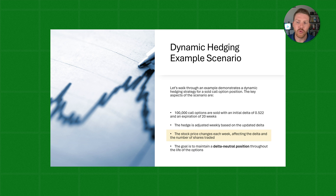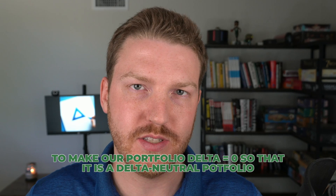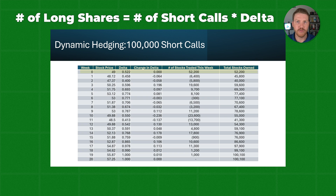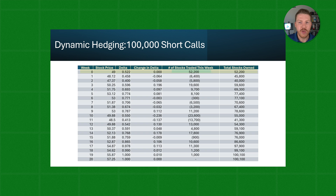Each week the stock price is going to keep changing, which will affect the Delta. So we need to determine how many shares to buy or sell of the underlying stock to maintain a Delta neutral portfolio. We are short 100,000 call options and need to offset that position by buying shares. We start in week zero where the Delta is 0.522. The number of shares we need to purchase equals the Delta of the option — 0.522 — multiplied by the 100,000 options, giving us 52,200 shares to purchase.